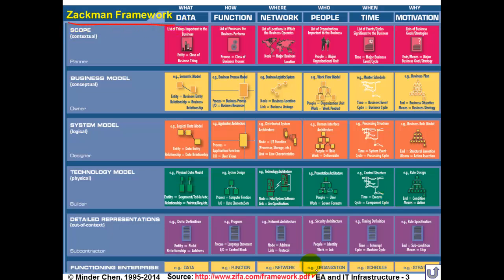You can find a PDF version of this here. Without looking at the detail, the framework has rows and columns. The rows indicate different levels of abstraction and detail — you can look at an enterprise from a very high level from the planner's view, looking at the whole context and scope, then at the conceptual level, looking at the business model from the owner's viewpoint. From the designer's viewpoint, you consider logically how you should implement this, and eventually physically from the technical viewpoint how certain things should be implemented.